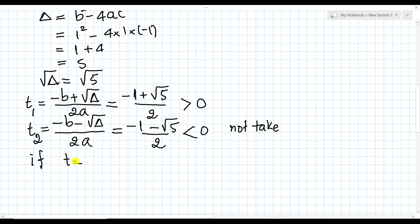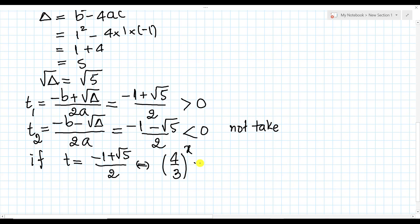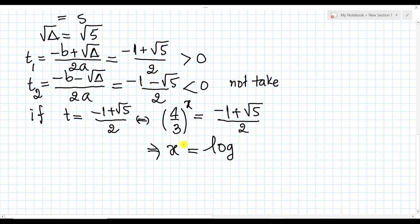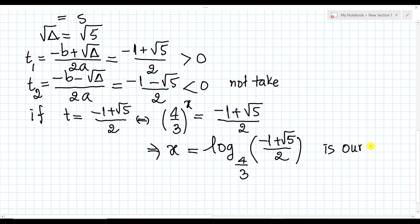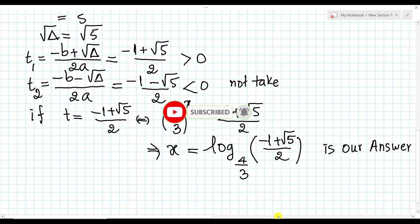So if t equals (minus 1 plus square root of 5) over 2, we can write (4/3)^8 equals (minus 1 plus square root of 5) over 2. Therefore x equals log base (4/3) of [(minus 1 plus square root of 5) over 2], and this is our solution. Thank you for watching and don't forget to subscribe to my channel for more exciting videos. Goodbye.